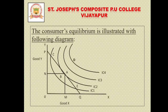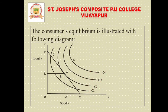This consumer equilibrium theory can be illustrated with the help of a diagram. On the OX axis you can observe Goods X, and on the OY axis Goods Y. IC1, IC2, IC3, and IC4 are different indifference curves. IC4 is the maximum level and IC1 is the lowest. There are different points: A, B, C, D, and E. The question is: at which point does the consumer get the maximum level of satisfaction, or which point is the consumer's equilibrium point?